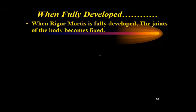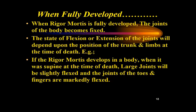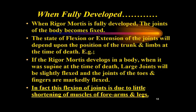When rigor mortis is fully developed, the joints of the body become fixed. The state of flexion or extension of the joints depends upon the position of the trunk and limbs at the time of death. For example, if rigor mortis develops when the body was supine at the time of death, large joints will be slightly flexed, and the joints of the toes and fingers are markedly flexed. This flexion is due to little shortening of the muscles of the forearms and legs.